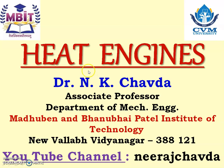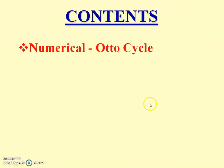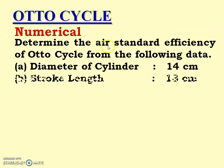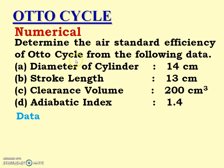Welcome friends, let us continue to study heat engines. The topic included in today's lecture is a numerical on the Otto cycle: determine the air standard efficiency of the Otto cycle from the following data — diameter of cylinder 14 cm, stroke length 13 cm, clearance volume 200 cm³, and adiabatic index 1.4. We have to calculate the air standard efficiency of the Otto cycle.